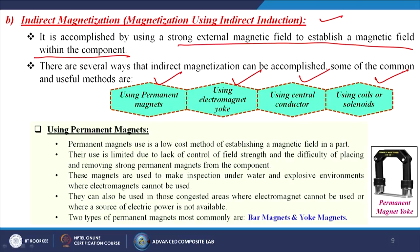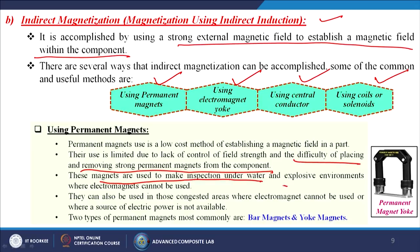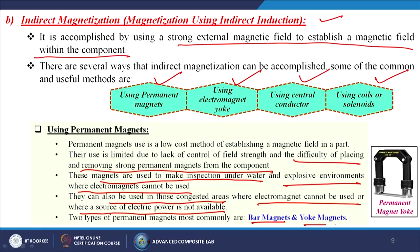Using permanent magnets is a low-cost method to establish a magnetic field in a part. Their use is limited due to lack of control of field strength and the difficulty of placing and removing strong permanent magnets from components. We simply keep a permanent magnet beside our sample, which affects the sample, and then we can perform the testing. These magnets are used for inspection underwater and in explosive environments where electromagnets cannot be used, and also in congested or remote areas where electric power is not available.